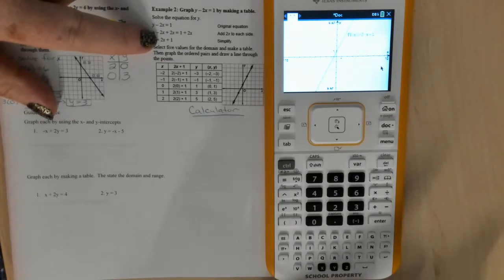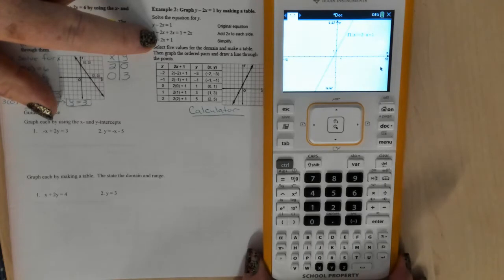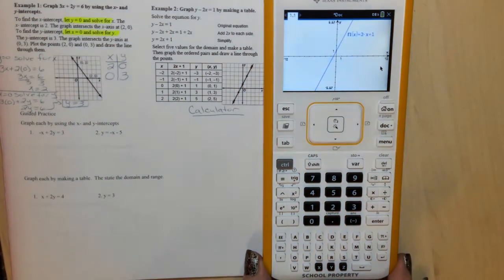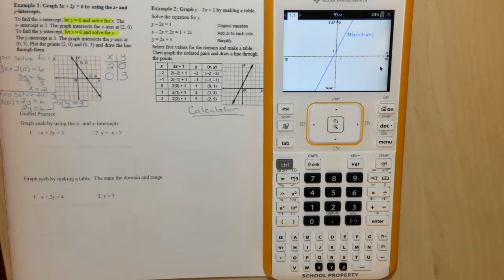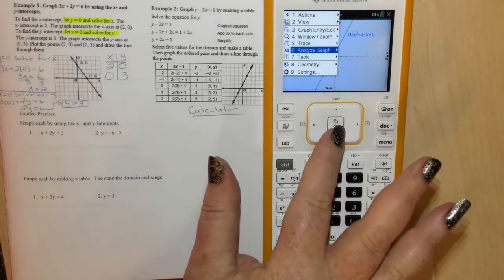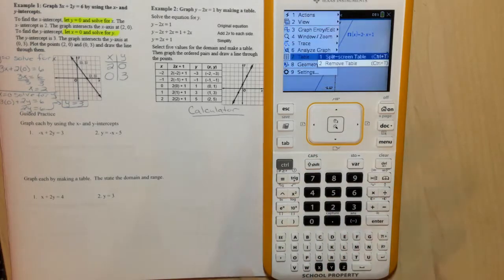Now we're not so concerned with the line right now as we are with the table. So let's pull up a table. Go to menu, option 7, enter, split screen table.